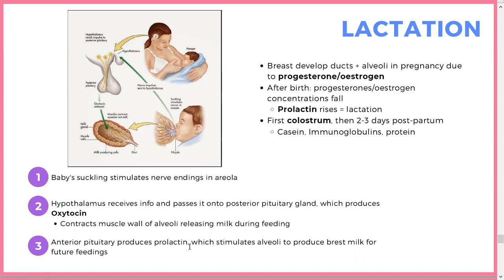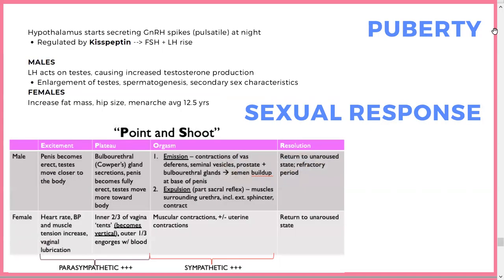Prolactin was inhibited by progesterone and estrogen during pregnancy. Once the baby is born, those hormones drop, allowing prolactin to rise. Initially colostrum is produced, and then full milk two to three days after. Puberty: kisspeptin causes a pulsatile rise in GnRH, leading to FSH and LH rises — this occurs nocturnally and is what triggers puberty.